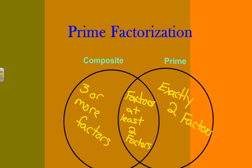So prime factorization is when you take a composite number, which is a number that has three or more factors, and you write it as a product of only prime numbers. And a prime number, remember, has exactly two factors.